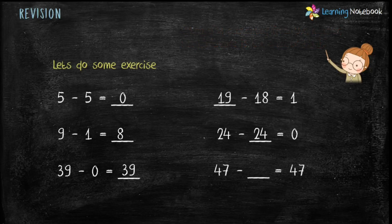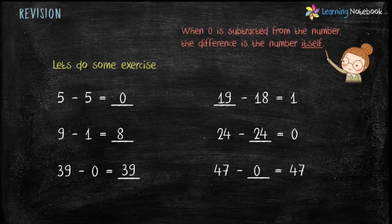The last one: 47 minus ___ equals 47. The answer is 0, because when 0 is subtracted from a number, the difference is the number itself. So students, in this video we learned subtraction facts, which are very useful for the rest of the chapter.